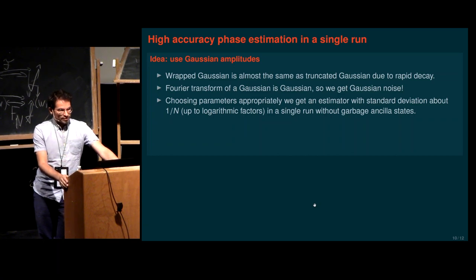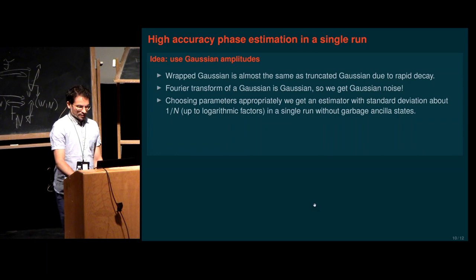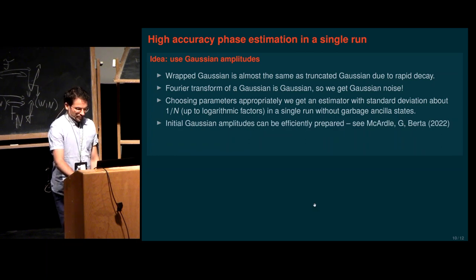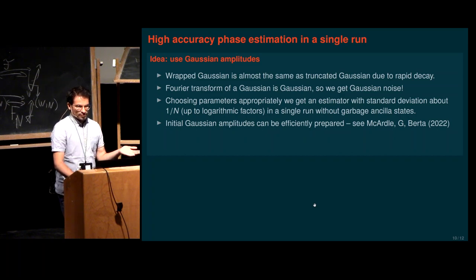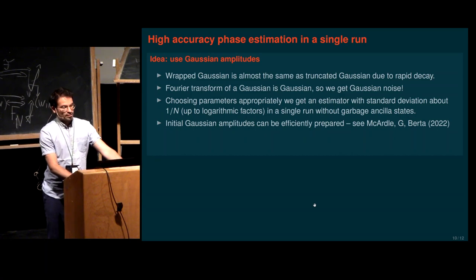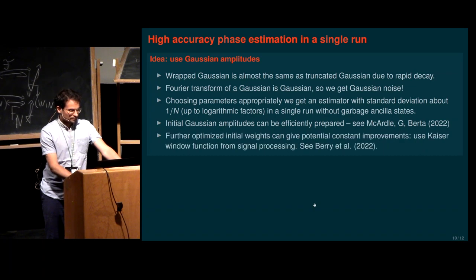All this you get in a single run of phase estimation, without creating any garbage ancilla states. Gaussian states are very nice — you can create these amplitudes with a very efficient circuit, slightly more complicated than applying Hadamard gates but still with low depth. The initial weights can be further optimized using a so-called Kaiser window function from signal processing, which gives a constant improvement over Gaussians.